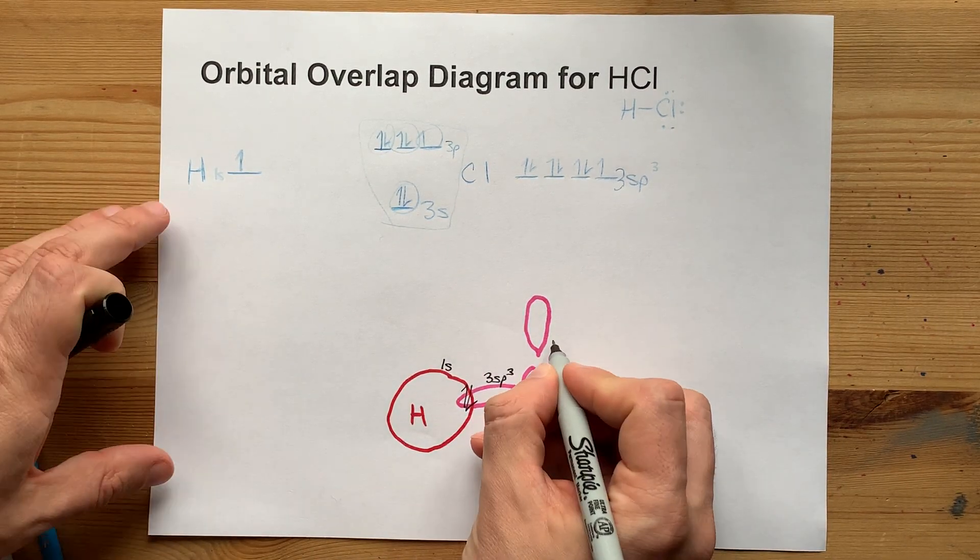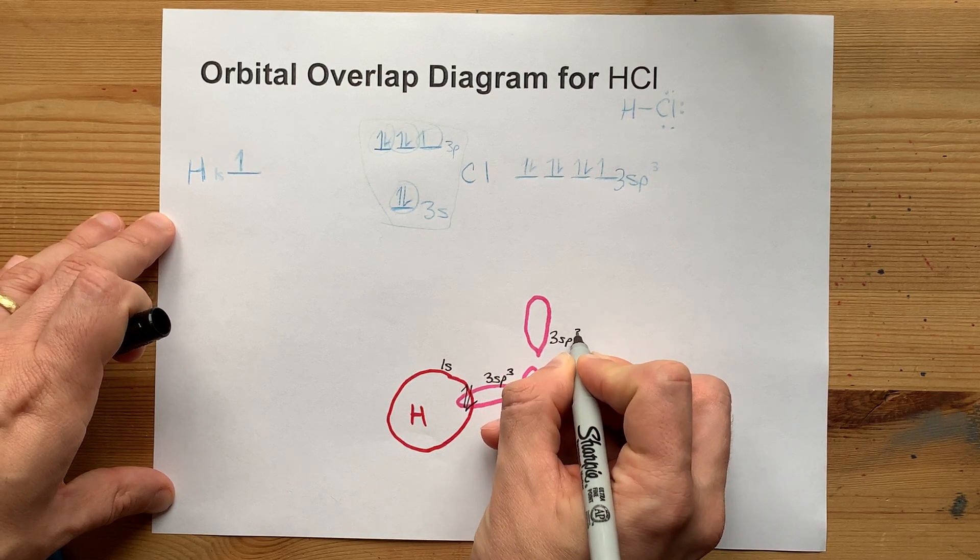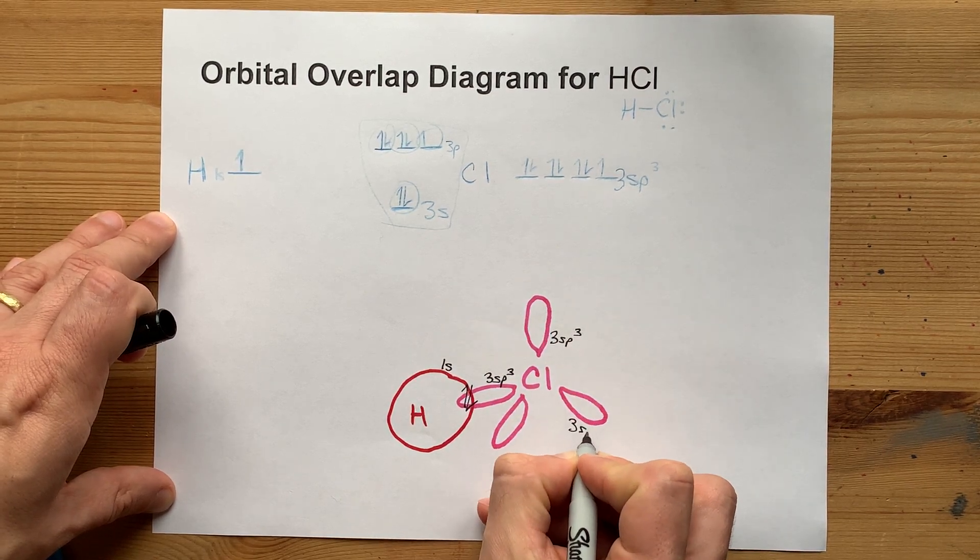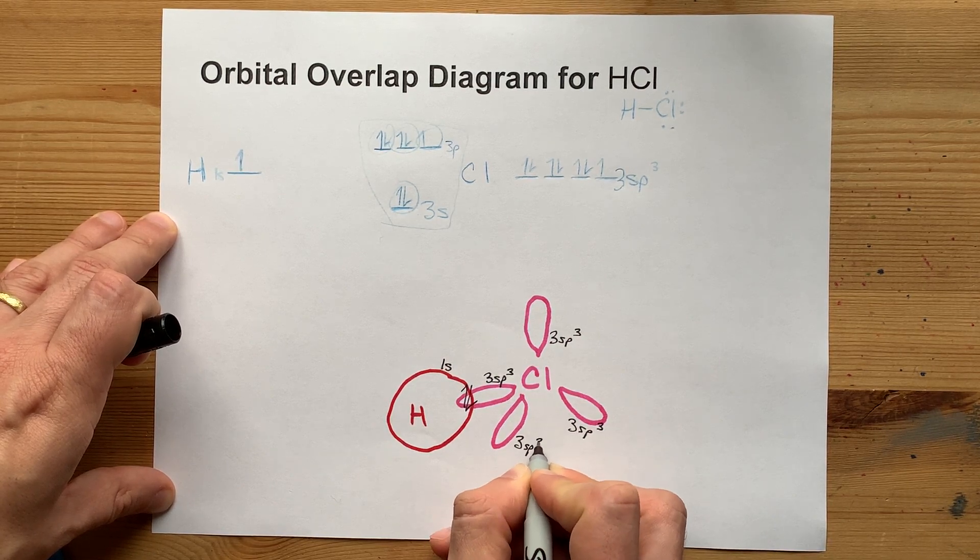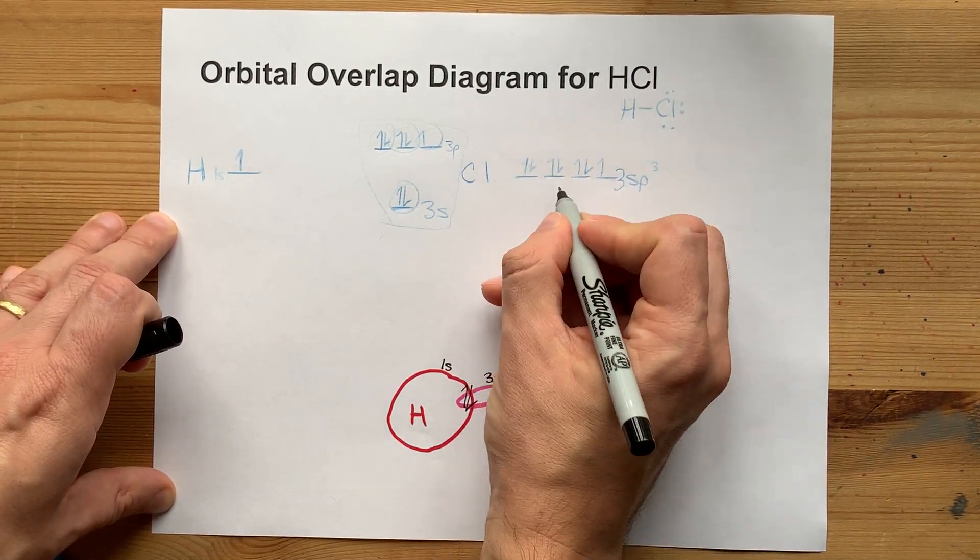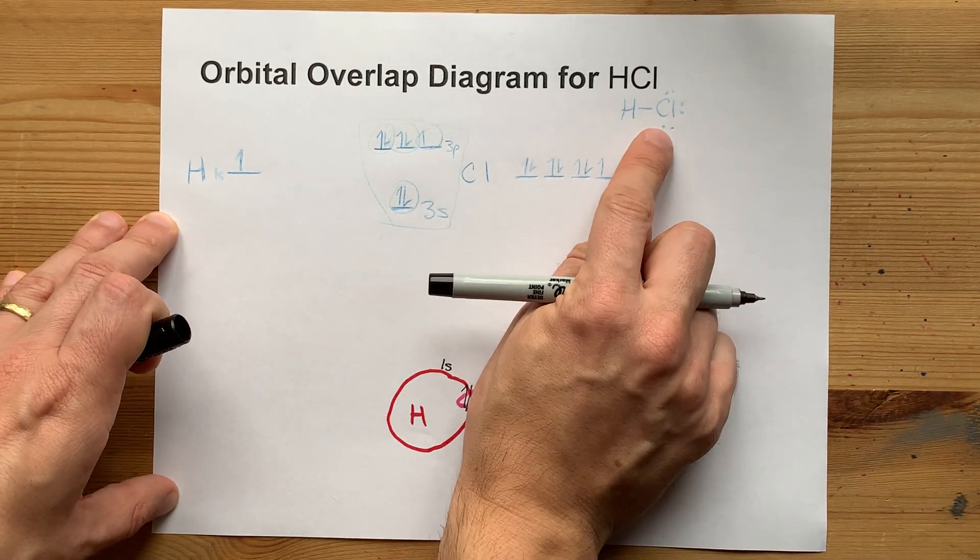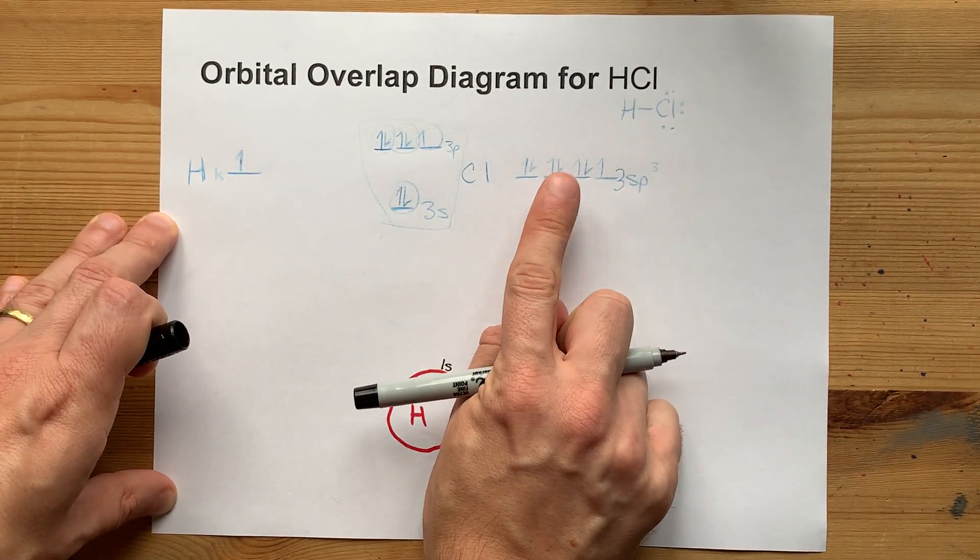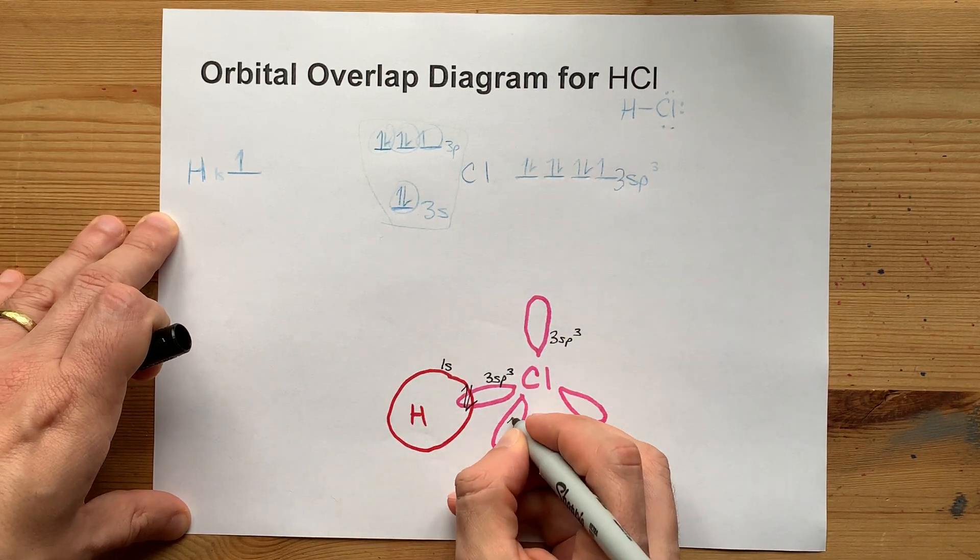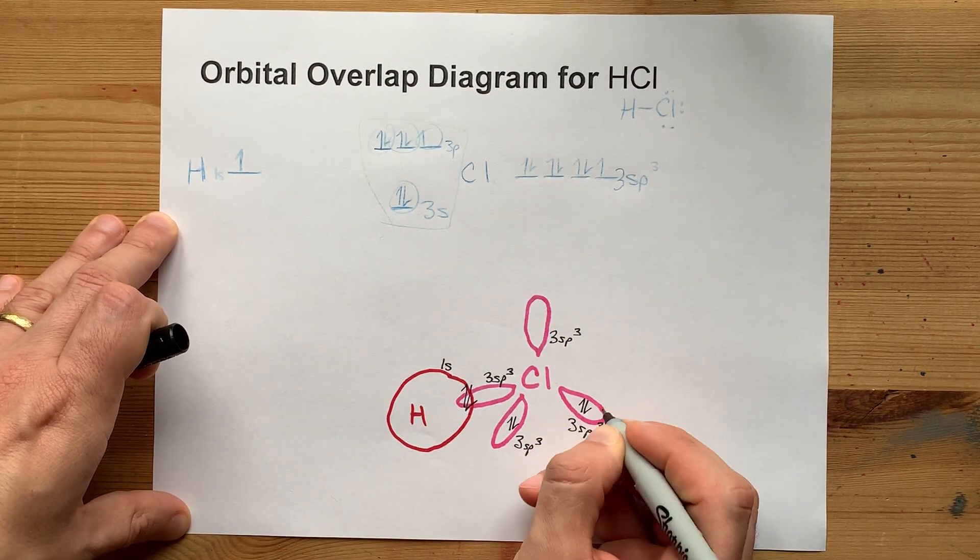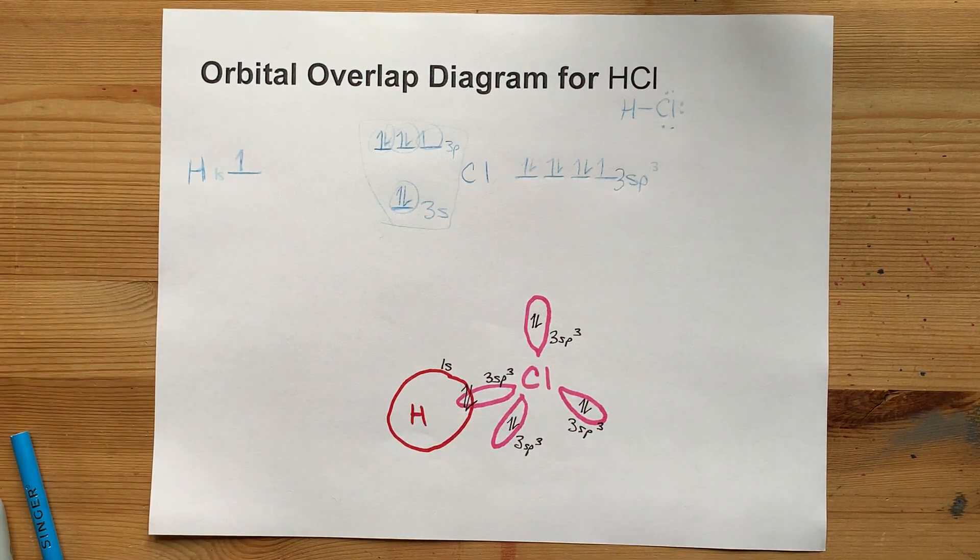Now, these other orbitals here are also 3sp3s. And they all had lone pairs in them. You can see that on both the Lewis structure and in my orbital diagram here. So, I'm going to put 1, 2, 1, 2, 1, 2 inside there.